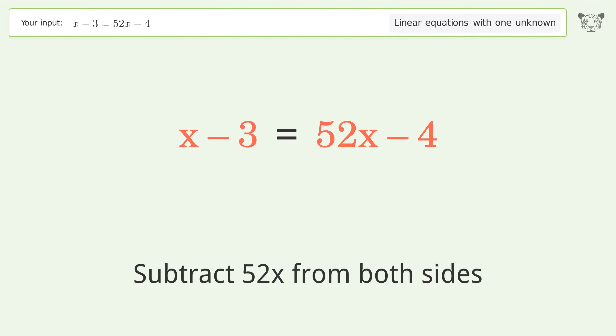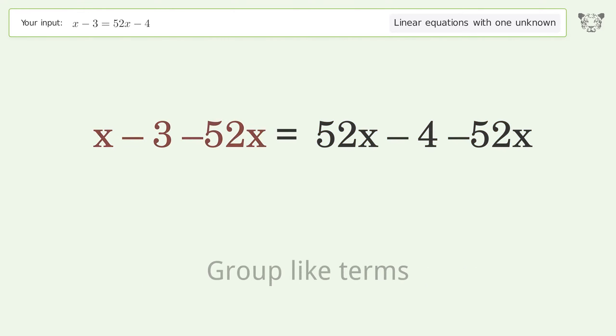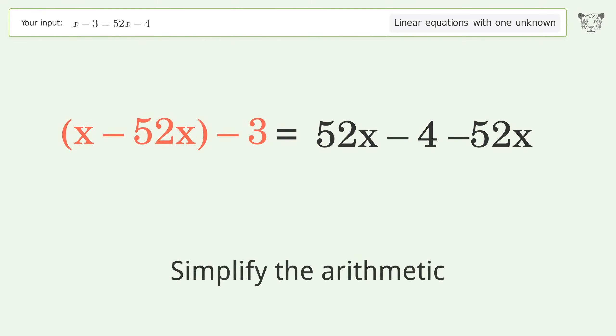Subtract 52x from both sides. Group like terms. Simplify the arithmetic.